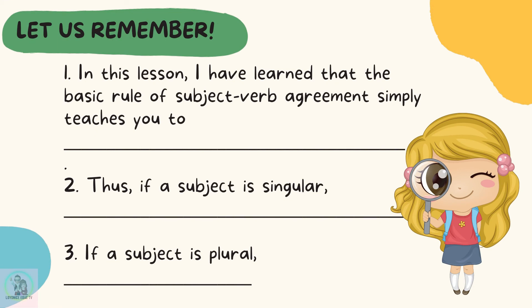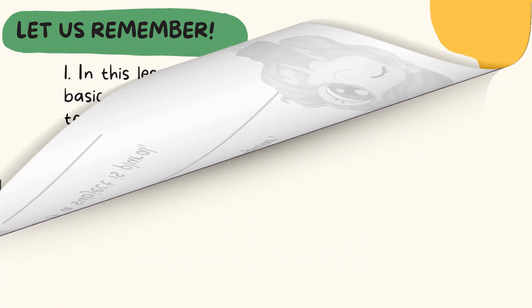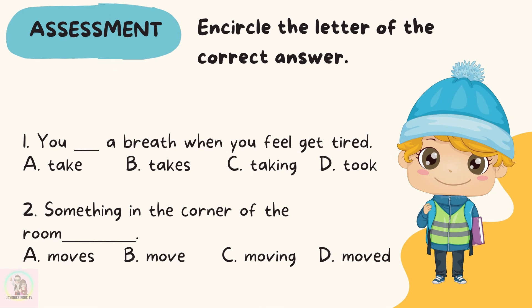This time, let me know what you have learned from this lesson by supplying the given sentences. Now for our final activity, encircle the letter of the correct answer. Number one: you blank a breath when you feel you get tired. A) take, B) takes, C) taking, D) took. Number two: something in the corner of the room blank. A) moves, B) moved, C) moving, D) moved.